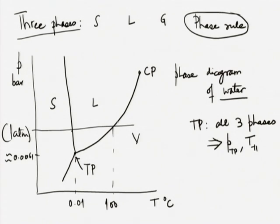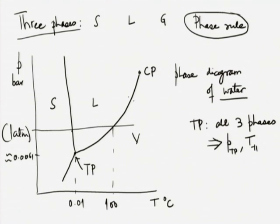As pressure decreases, the boiling point decreases, reaching triple point temperature at triple point pressure. As pressure increases, the boiling point increases, but also the difference between liquid and vapor — as indicated by the difference in densities — goes on decreasing. When liquid boils, the liquid and its vapor will have the same pressure and temperature. The densities will be different; that is why we call them two phases. This density difference goes on decreasing, and there is a point known as the critical point at which the density difference vanishes.